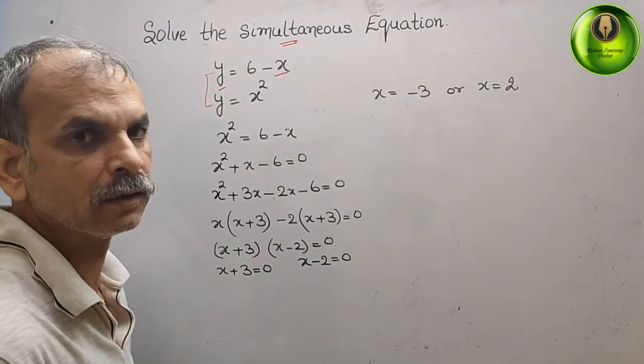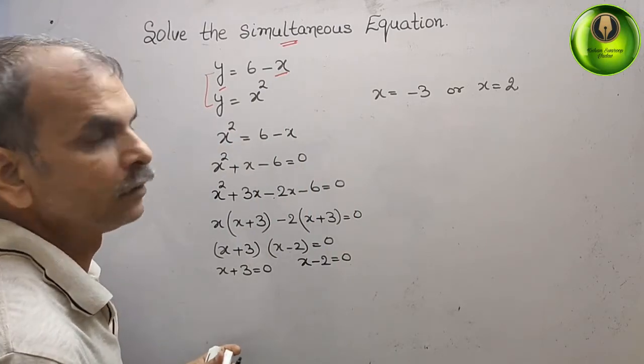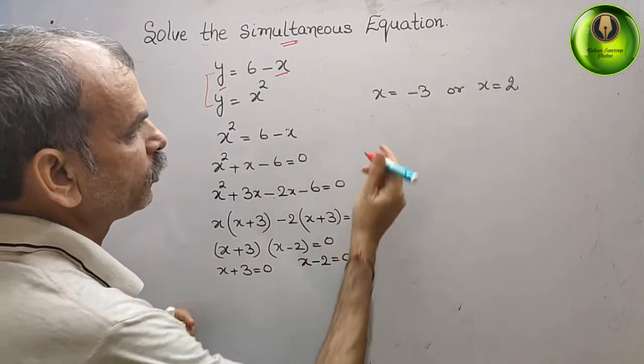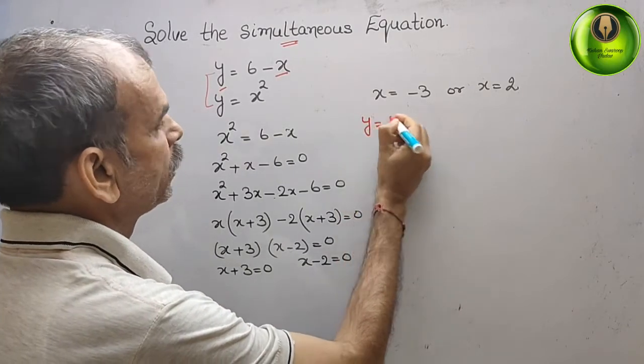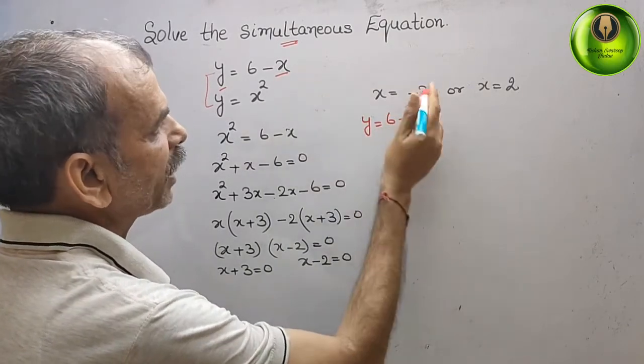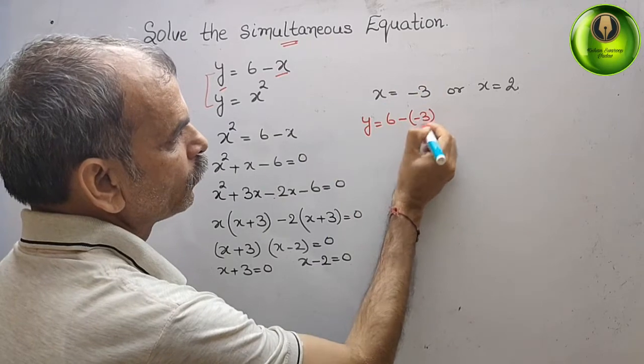We will get y = 6 minus of minus 3, that is equal to 6 + 3 that is equal to 9.